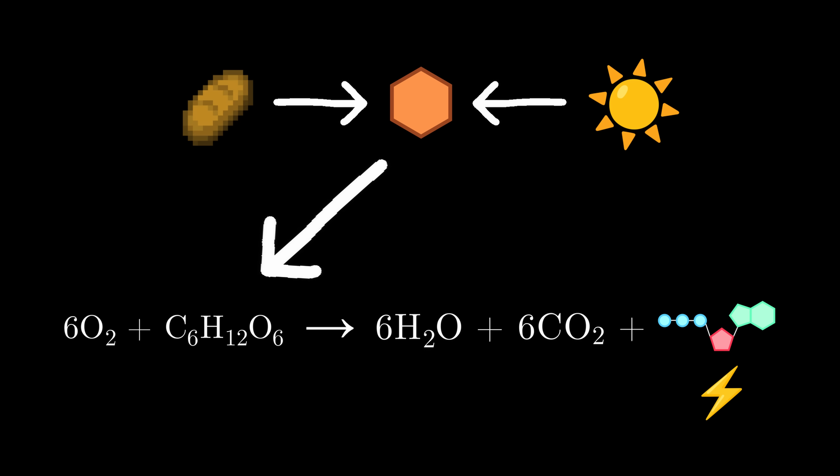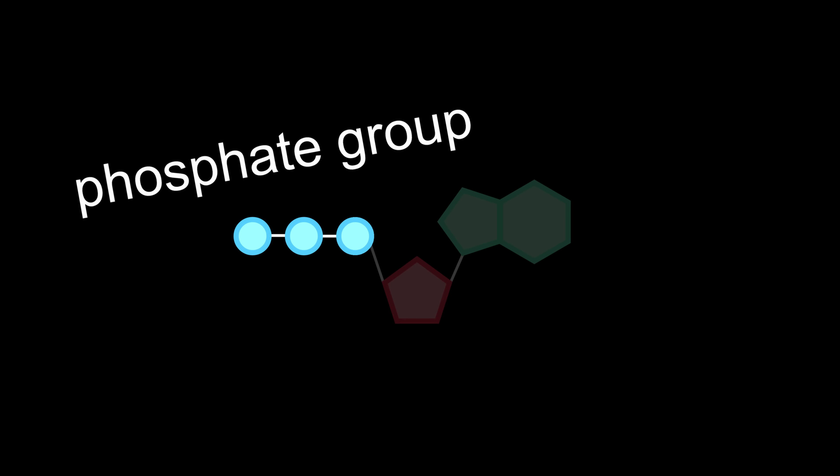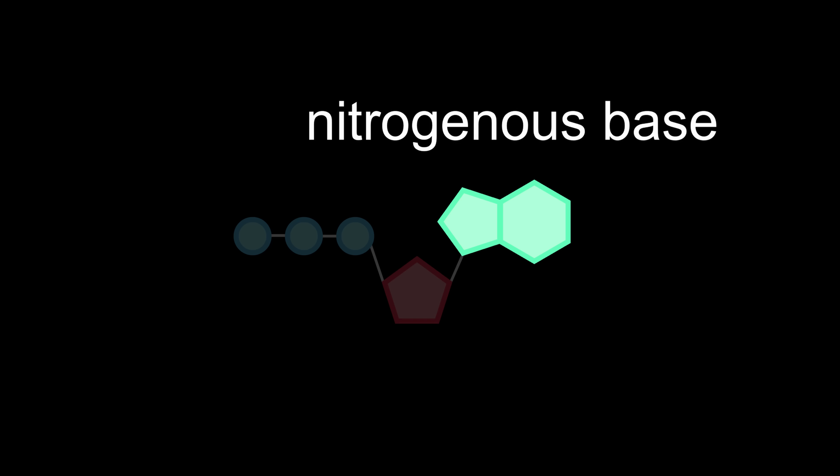Okay, quick recap, once you have glucose, either from food or photosynthesis, you can do cellular respiration to get energy in the form of ATP. Chemically, ATP is what's known as a nucleotide. It has a phosphate group, a 5-carbon sugar, and a nitrogenous base. You know what else is made of nucleotides?